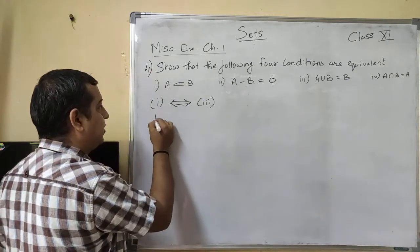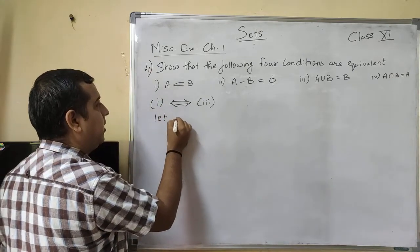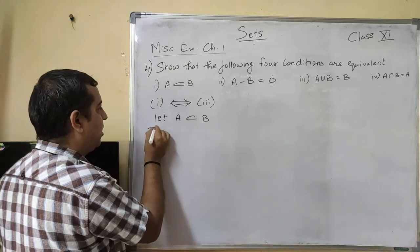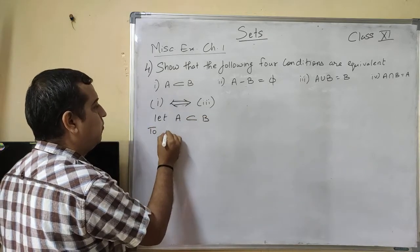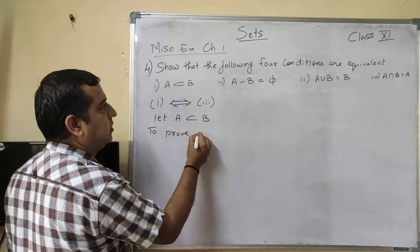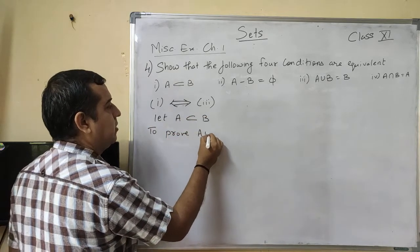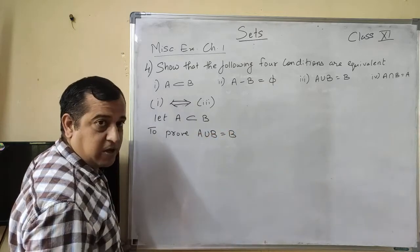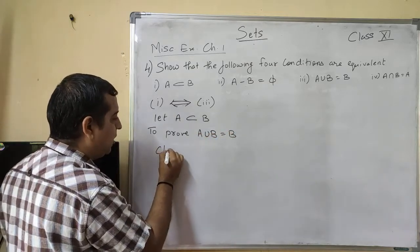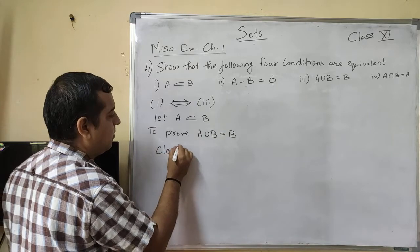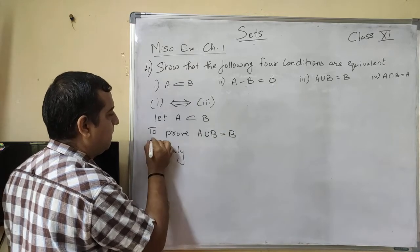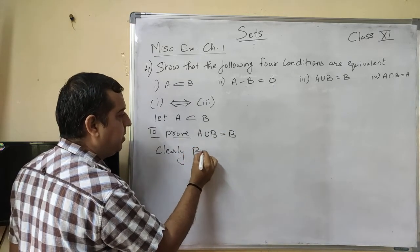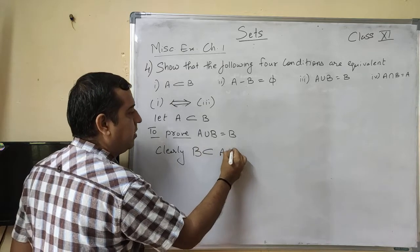Now we first consider: let A be a subset of B. हमें क्या प्रूव करना है? To prove A ∪ B = B. Now clearly, B is a subset of A ∪ B.